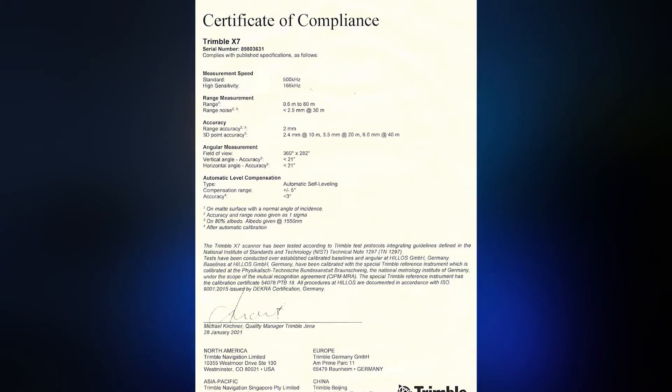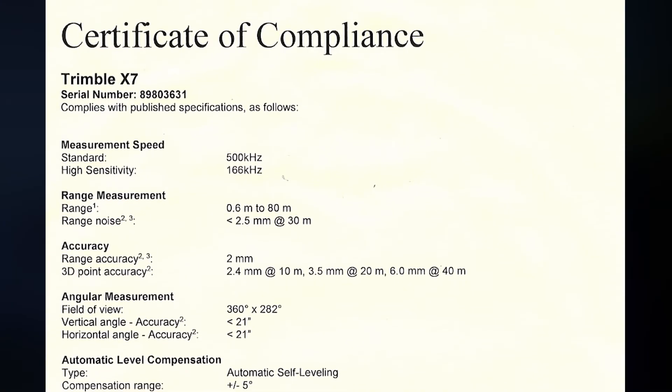However, when we add electronic measurement instruments to the mix, things can get a little interesting. That $8 tape measure, without a known likely error specification, is being used to verify the calibration of an instrument that is highly sensitive, precisely manufactured, and comes with a certificate of compliance that lists the likely accuracy specification. The old adage holds that we use an $8 tape measure to verify a $40,000 instrument.